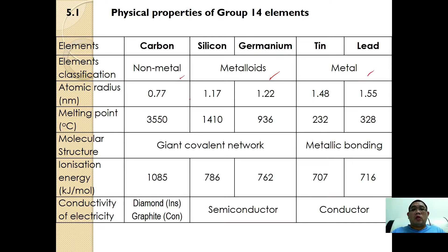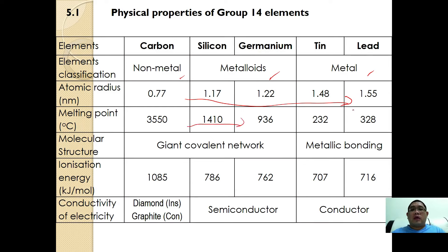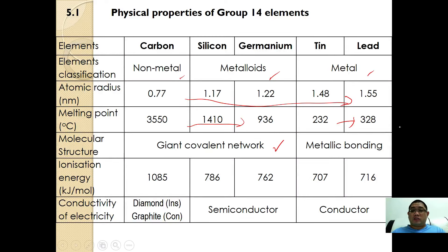As usual, when going down the group, the metallic radius increases. As for the melting point, it slightly varies, decreasing from carbon to germanium and further decreasing to tin, but for lead it increases a little bit. In terms of structure, carbon, silicon, and germanium all have a giant covalent network, whereas tin and lead, being metals, are held by metallic bonds.